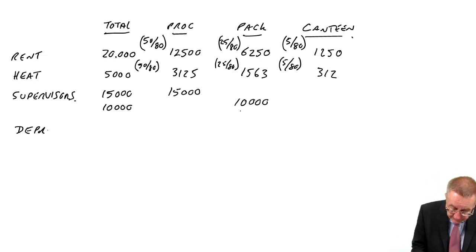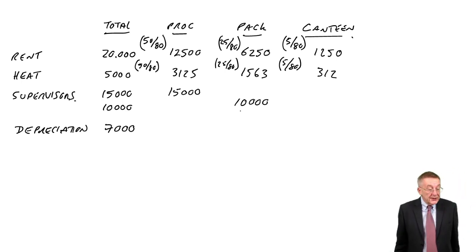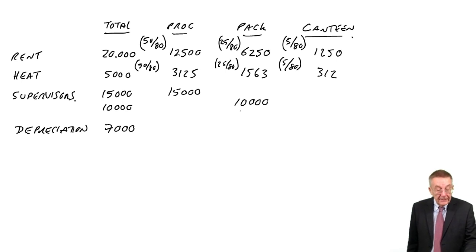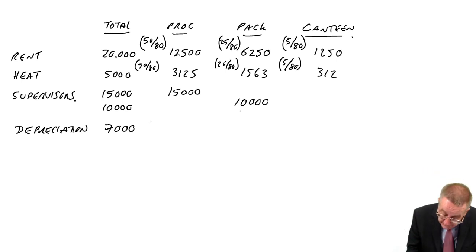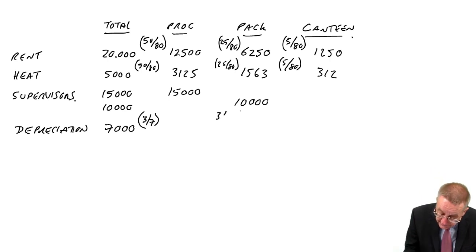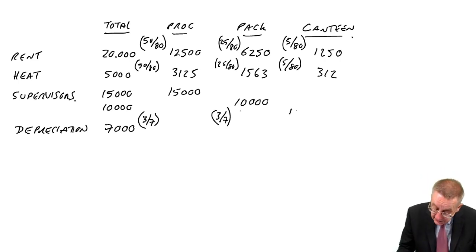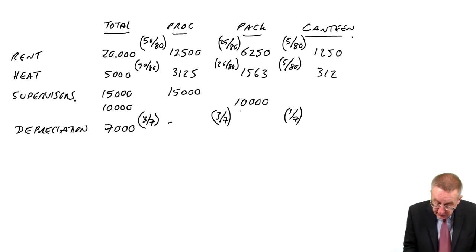Depreciation of equipment — 7,000 in total. Although it's paper F3, I think you should have heard of depreciation. The only sensible way of splitting it based on the information given is on the value of the equipment. The net book value is 300,000 in processing, 300,000 in packing, and 100,000 in canteen — a total of 700,000. Processing gets 300/700, packing gets 300/700, canteen gets 100/700. That divides nicely: processing 3,000, packing 3,000, canteen 1,000.